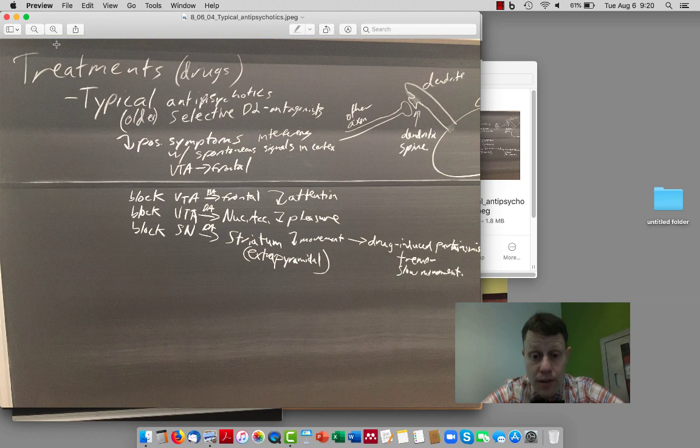Blocking receptors in the striatum can lead to difficulty with movement, and these are called extrapyramidal symptoms, although that's not a term you need to know for this class. And this drug-induced Parkinsonism, tremor, slow movement, because it's somewhat similar to Parkinson's disease. In the case of Parkinson's disease, the substantia nigra cells are dying. In the case of typical antipsychotics, we're blocking some of the signal from the substantia nigra to the striatum.